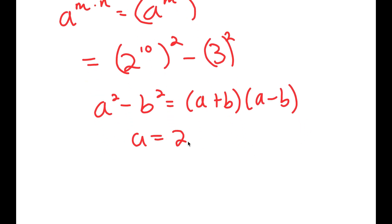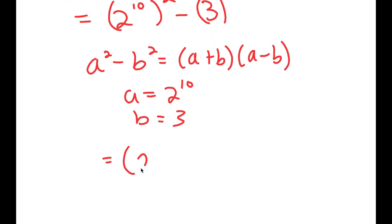So in this case, a is 2 to the power of 10 and b is 3. So I get 2 to the power of 10 plus 3 times 2 to the power of 10 minus 3.